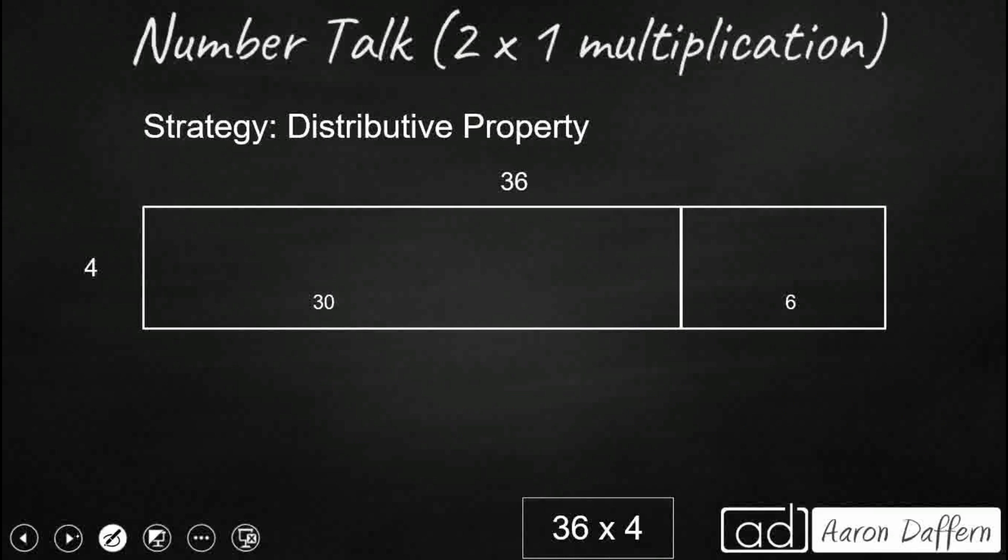If you did not use this distributive property, many of us like this version of the distributive property. It is always a good go-to. So 36 times 4, instead of breaking up the 4 into 2 and 2, what we are going to do is break apart the 36 into its place value. We are going to say it is 30 plus 6.